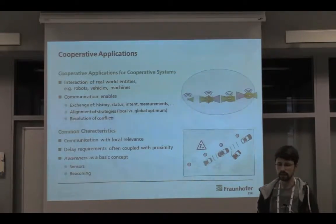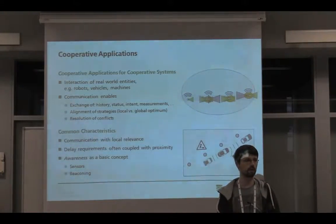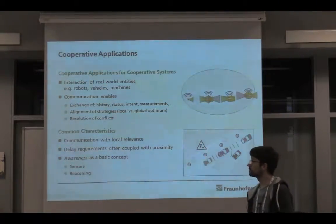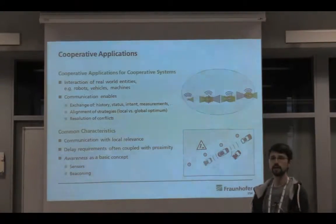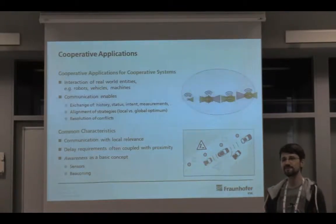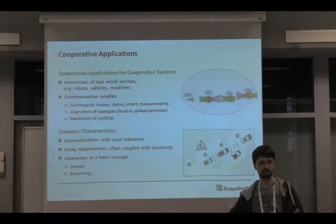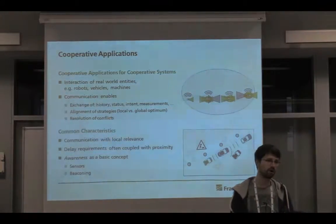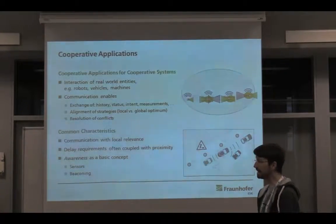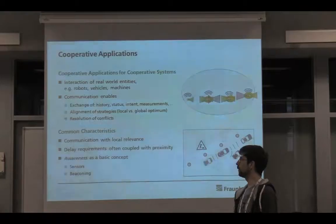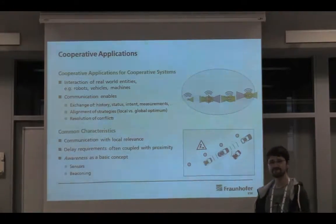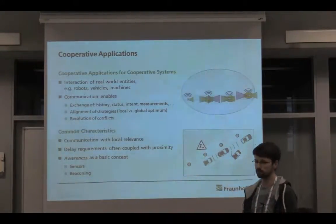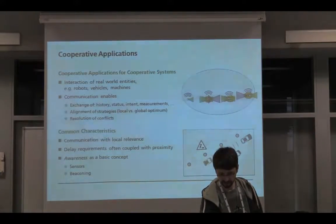Common characteristics we see: communication is of local relevance in most car-to-car cooperative situations. Delay requirements are often coupled with proximity, meaning the closer two entities are together, the less time we want to wait for information to travel between them. However, this also means if they move farther away there is more room on the delay or latency side. Awareness — whatever that means — is a very important concept; it can be provided either by sensors or by exchanging status information periodically, often referred to as beaconing.